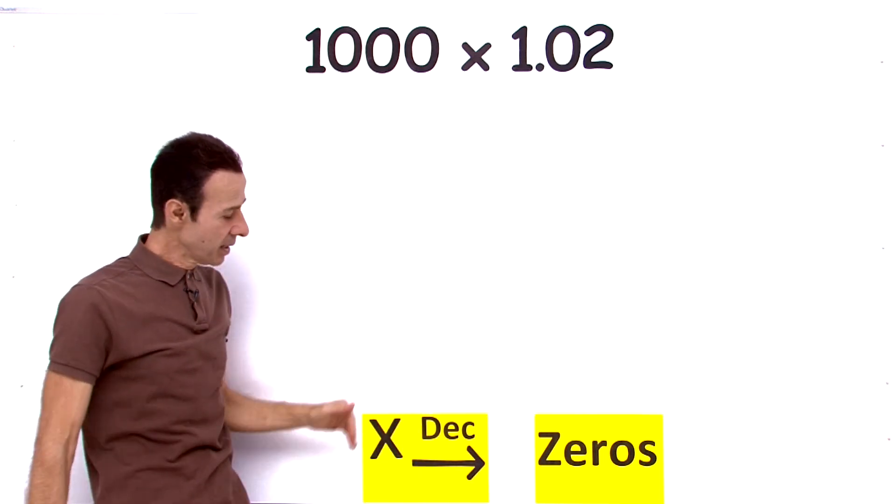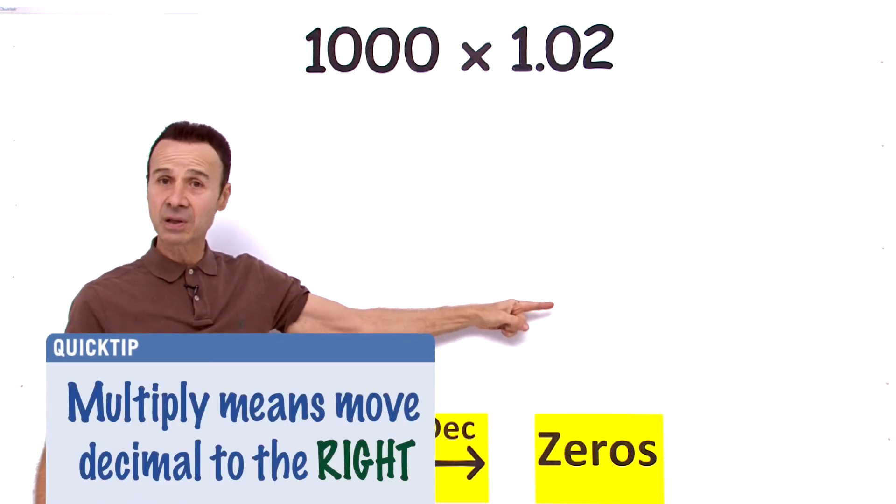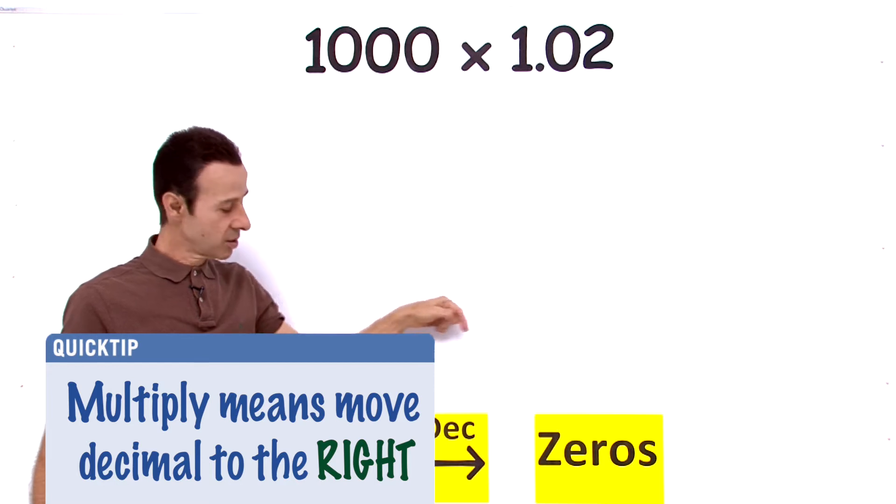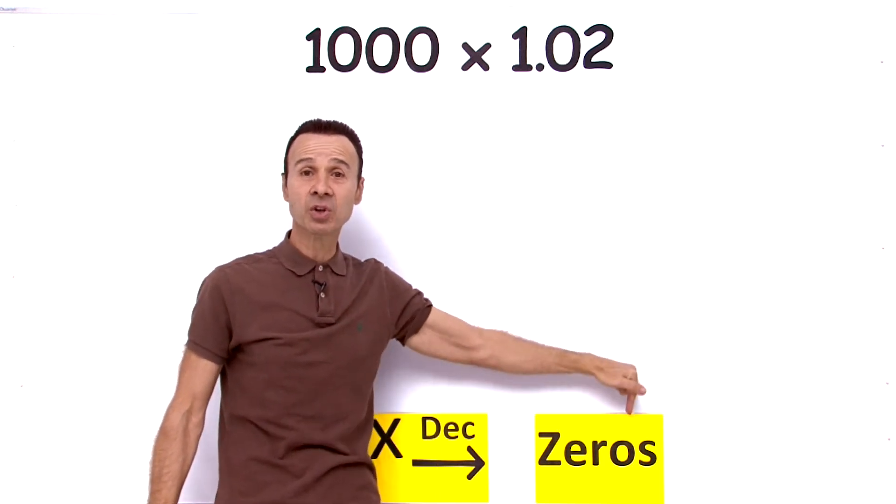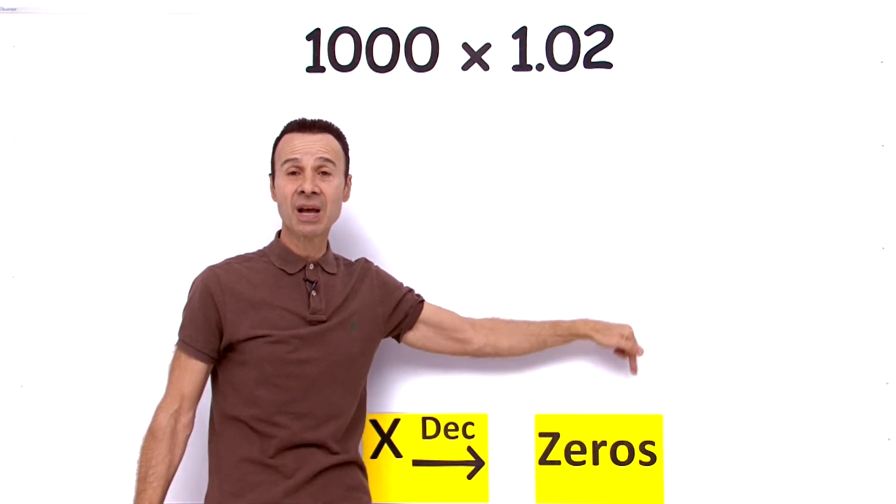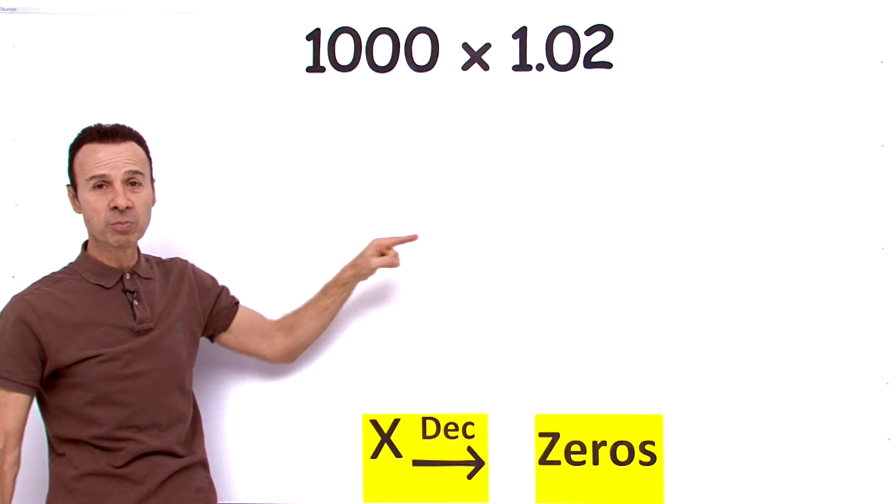When we multiply, the decimal place moves to the right, obviously because the number gets bigger. So it moves to the right, but how far to the right does it move? Well, it is determined by the number of zeros. The number of zeros determines the number of decimal places we move to the right.